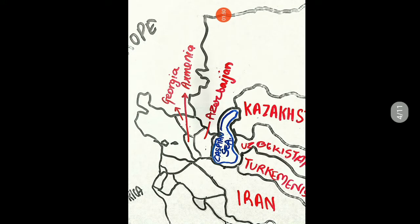The next countries are Georgia, Azerbaijan, and Armenia. You can remember Azerbaijan as 'Azer-baijan.' I have outlined the Caspian Sea here, so you can find prelims questions like 'which countries surround the Caspian Sea' — this is why we are going through this activity of learning all the countries.